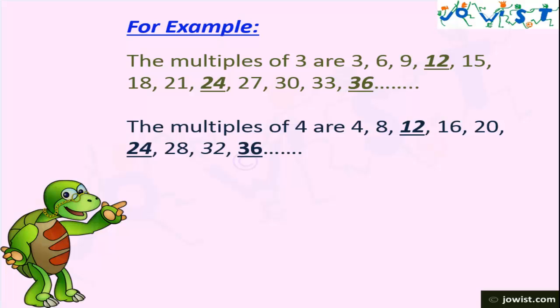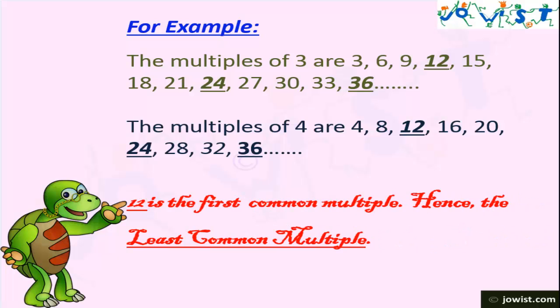If we look closely, we find 12, 24, and 36 in the multiples of 3 as well as 4. So 12 is the first common multiple. Hence, the first common multiple is also called least common multiple. So 12 is the least common multiple.